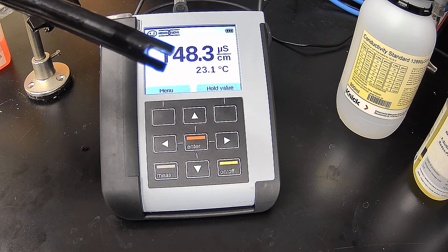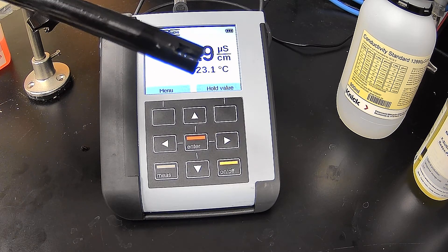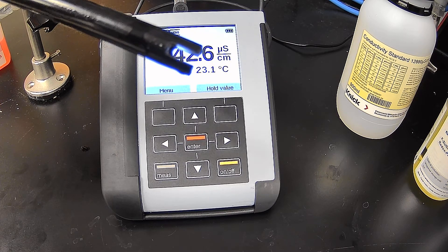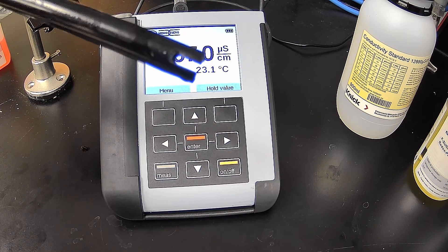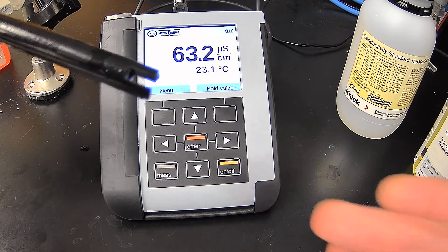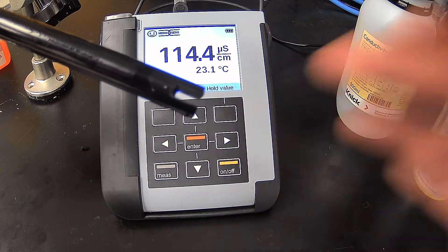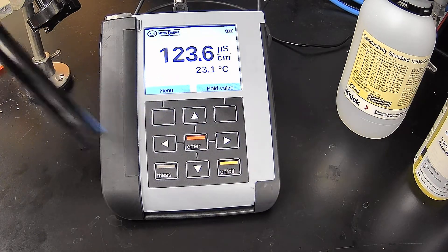The way this particular electrode works is, as you can see, there are two electrodes facing each other across a fixed distance or gap. So anything that affects the distance between these two electrodes is going to potentially change the conductivity reading.